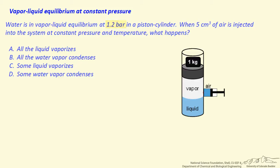What we're going to do is inject into the vapor phase 5 cubic centimeters of air. We're going to keep the pressure constant because we have a constant weight on the piston, and we have this in a constant temperature bath.